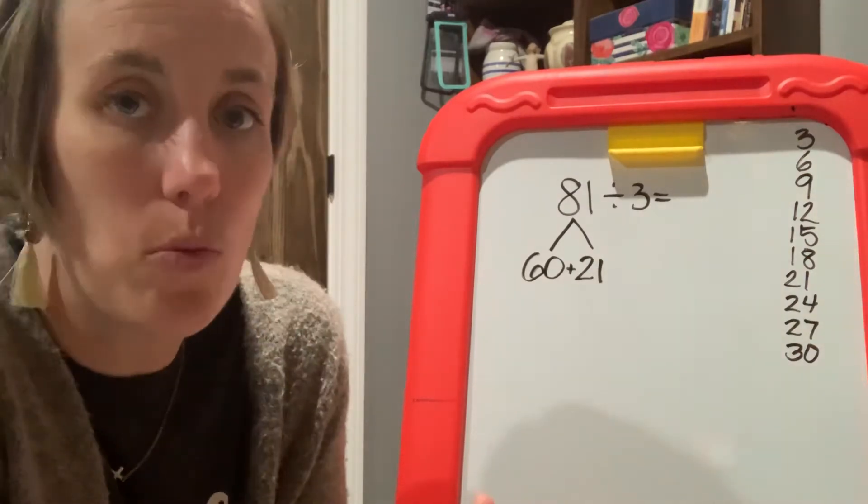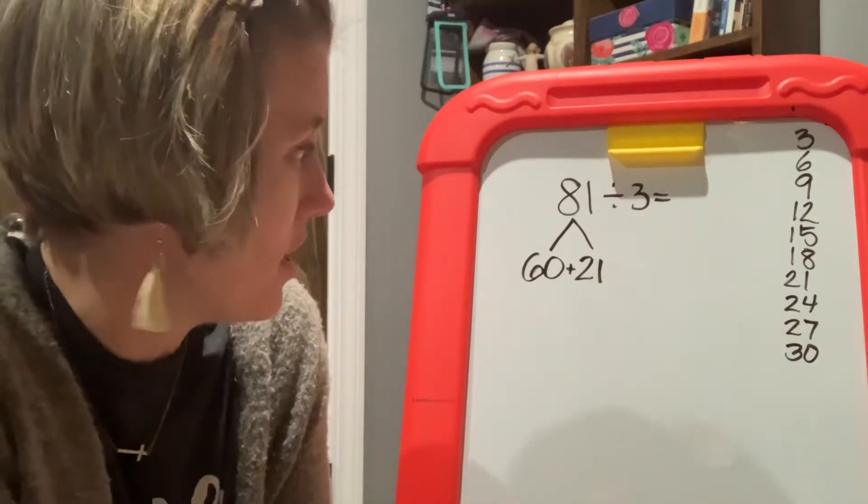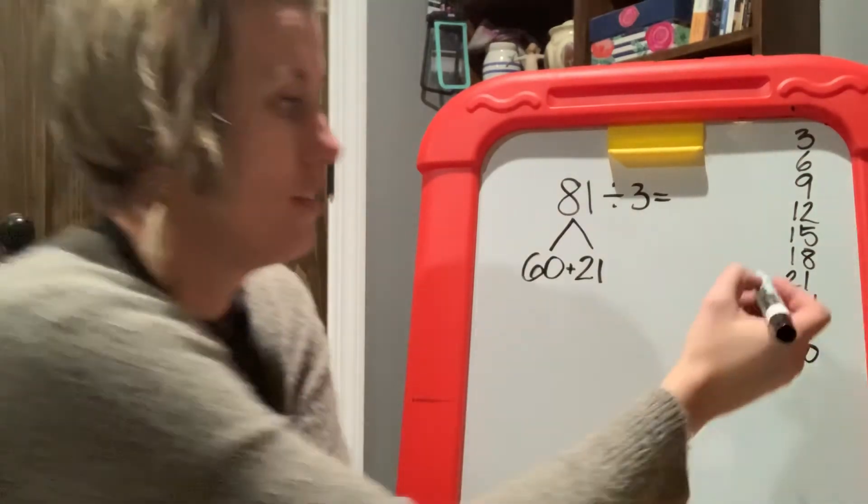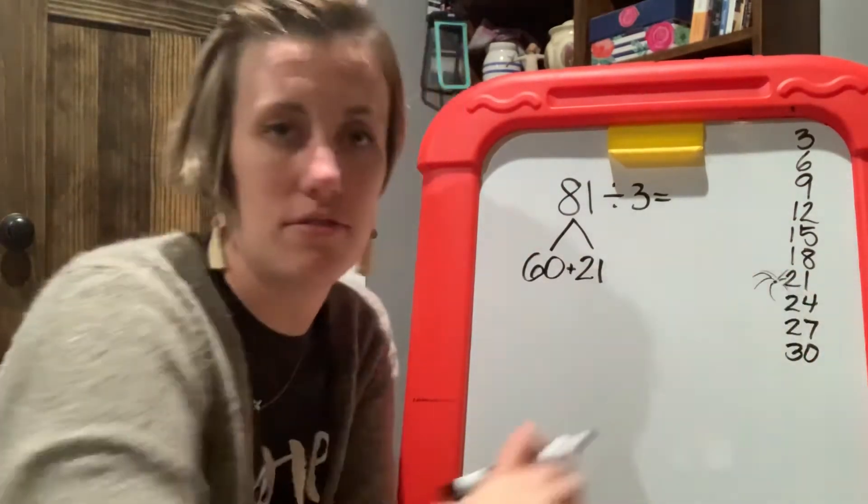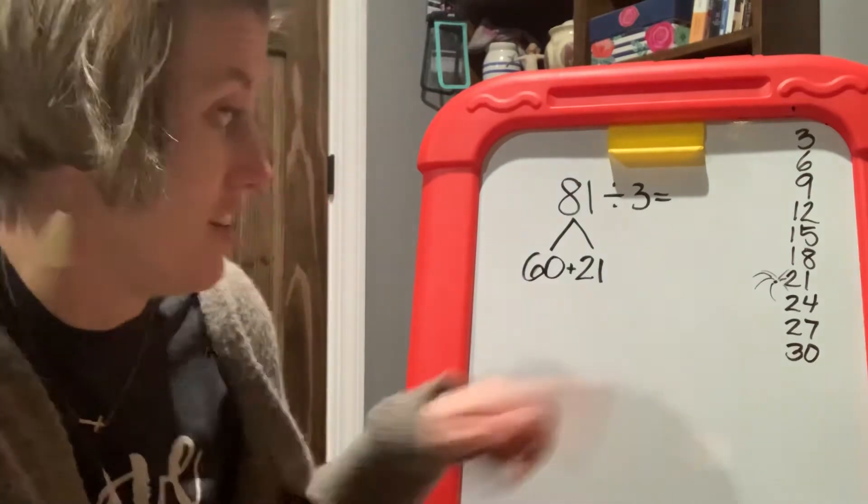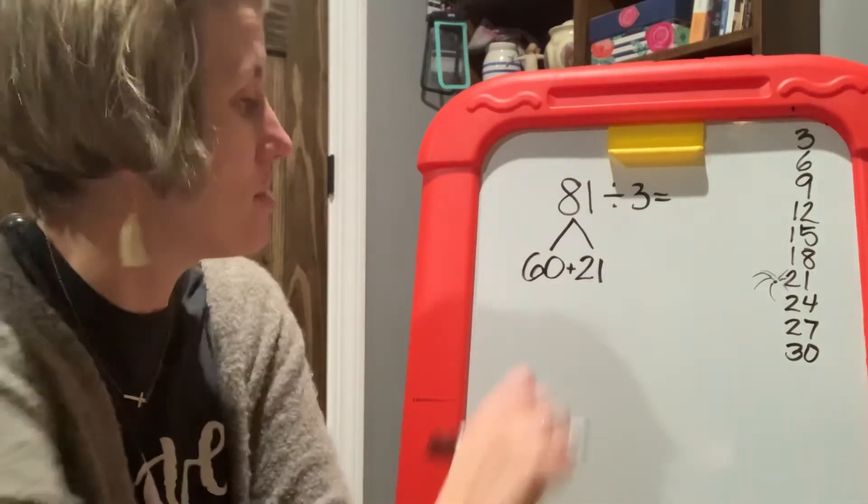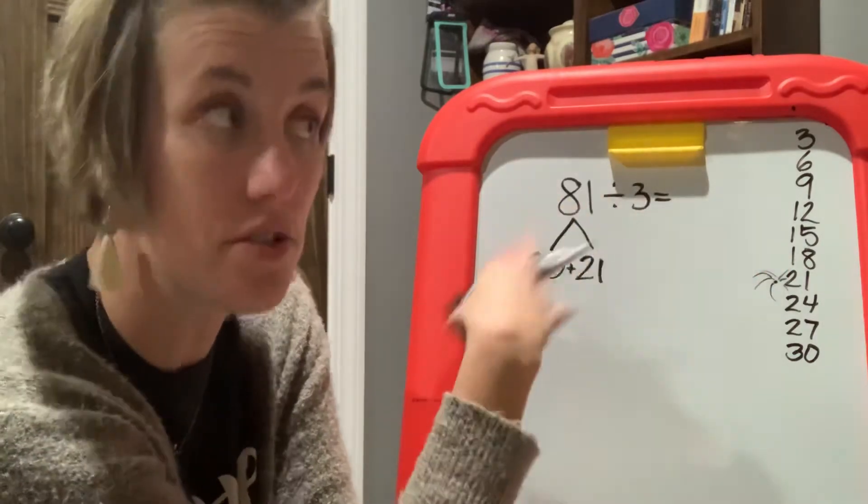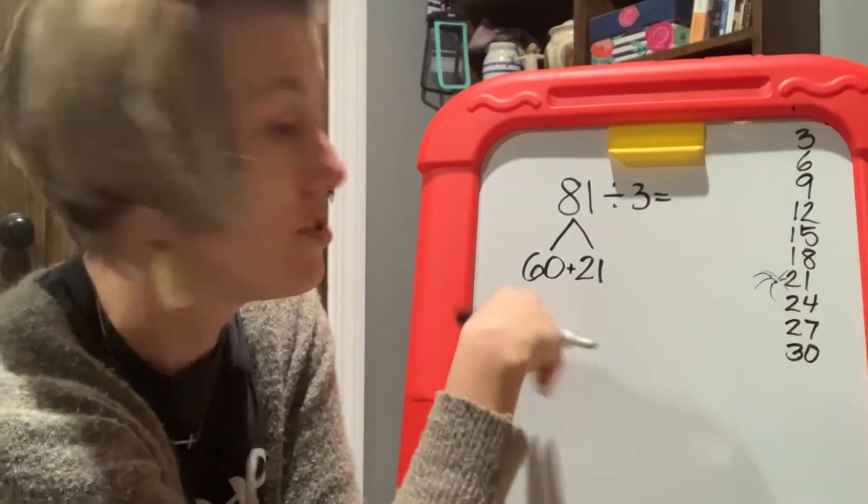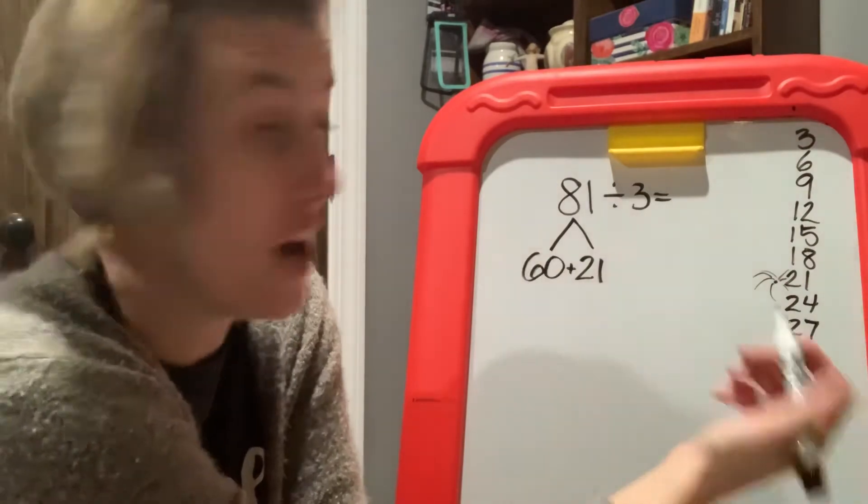And if I have 21 left out of there, look, here's those fireworks again. Ding, ding, ding, ding. Fireworks for 21. So I'm feeling good about that. So once you distribute your number and you kind of think about what numbers are going to work for you, then it's time to divide.